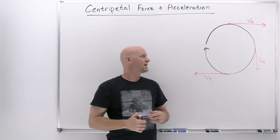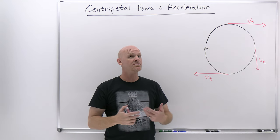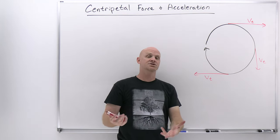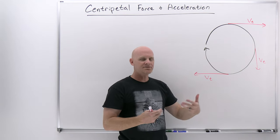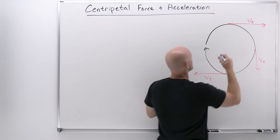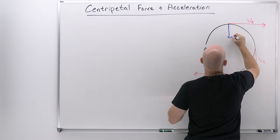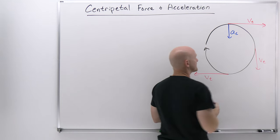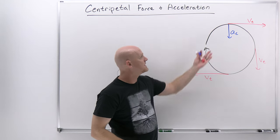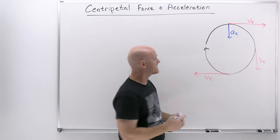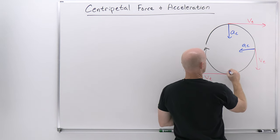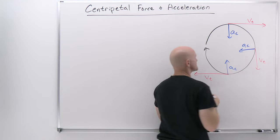Now we've got to talk about what we call centripetal force and centripetal acceleration. What's keeping it on this circular path? In this case it's the string, but we have to give a description of the force that the string is providing. That force always points toward the center of the circle. The acceleration that accompanies it we're going to call centripetal force and centripetal acceleration. Here it points toward the center, here it points toward the center, and here it points toward the center.